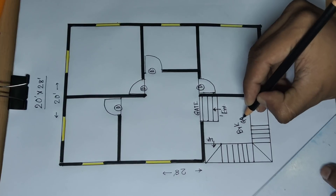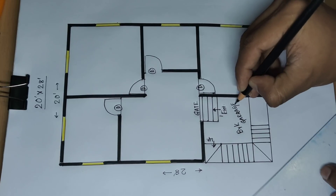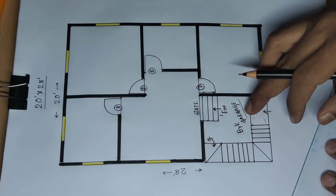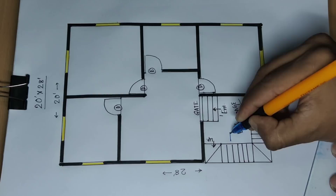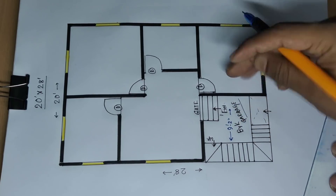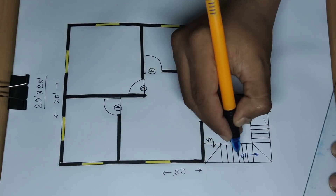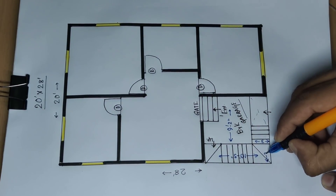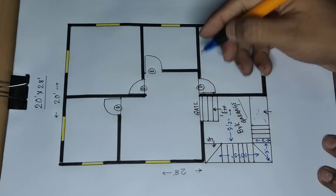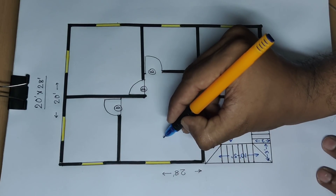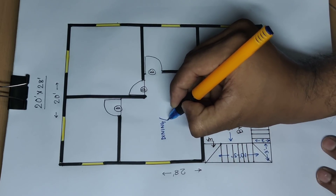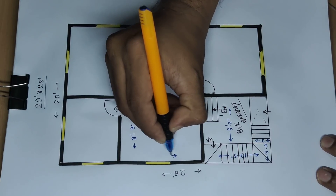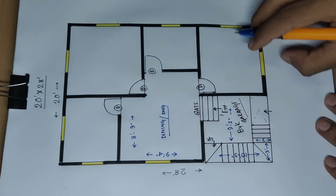Bike garage, bike garage. Open area stair. This is open area — this side distance 9 feet 2 inch, total distance and this side distance 10 feet 5 inch. This side 3 feet and this side 3 feet wide. Bike garage and main gate, open area. This is the dining and drawing area — distance 8 feet 9 inch and 9 feet 4 inch.